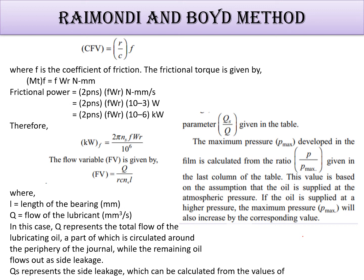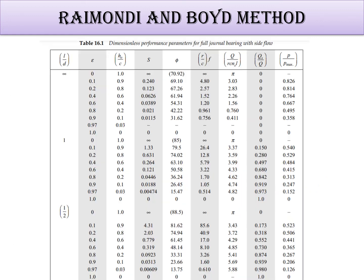Let's see these things in the table because this value is based on the assumption that the oil is supplied at the atmospheric pressure. If the oil is supplied at a high pressure, the maximum pressure will also increase. This is the table which is generated by the Raimondi and Boyd method. Based on that, this formula is being generated. This is h₀/c, S, φ, r/c, f, Q, Qs/Q - all these parameters are used for calculating numbers.